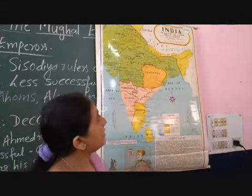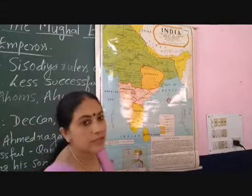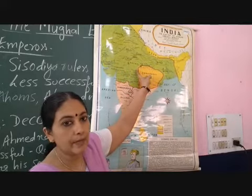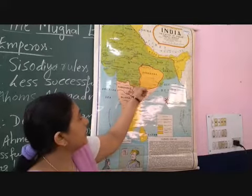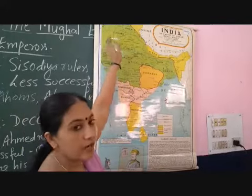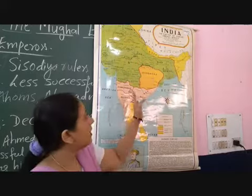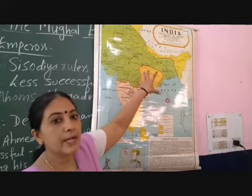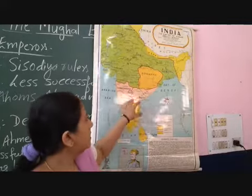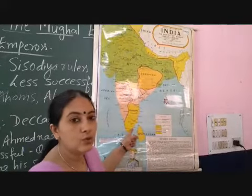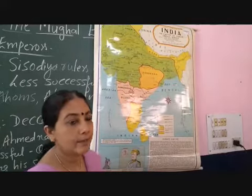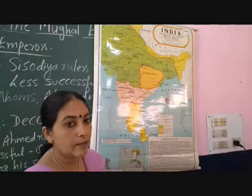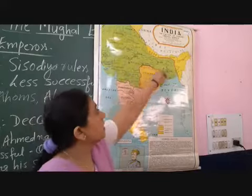This map shows the empire of Akbar from 1556 to 1605 A.D. The green portion is the empire of Akbar. He extended to Kashmir, towards the Afghanistan area, and Bengal was also under the control of Akbar. The Rajputana portion was a semi-independent region. The yellow portion was ruled by Hindu rulers not under Akbar, and another portion was ruled by Muslim rulers also not under Akbar's empire. So Akbar's empire was this green portion.